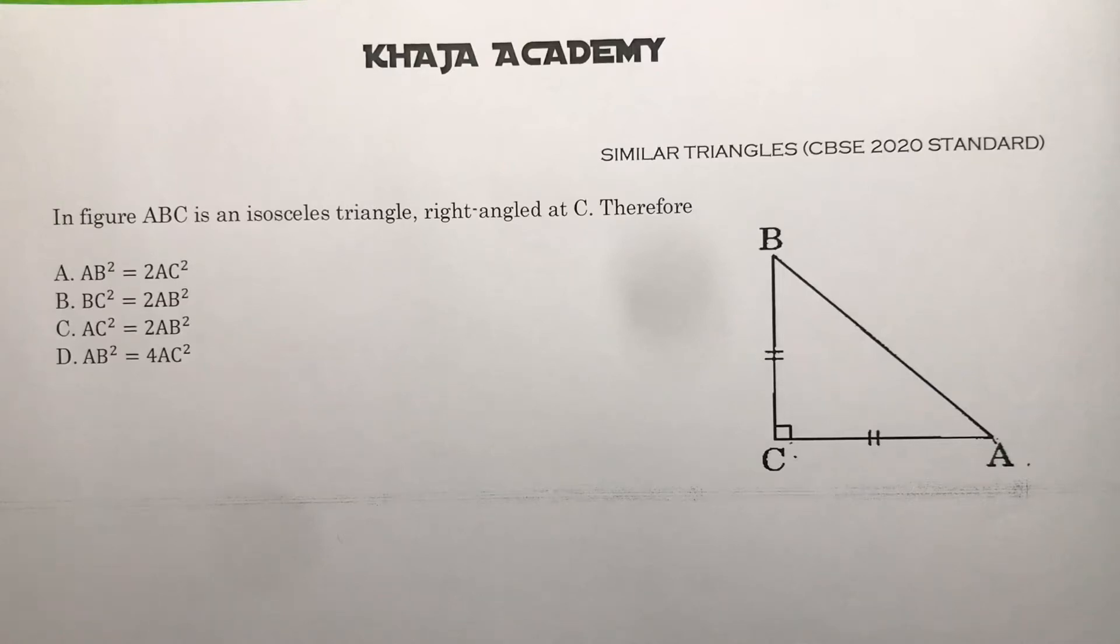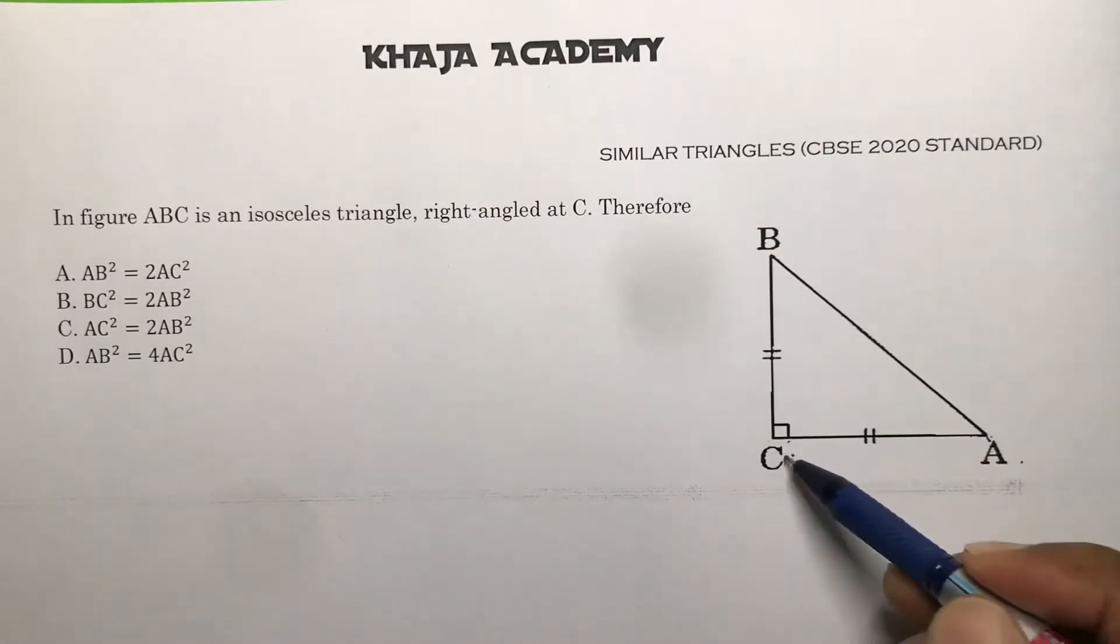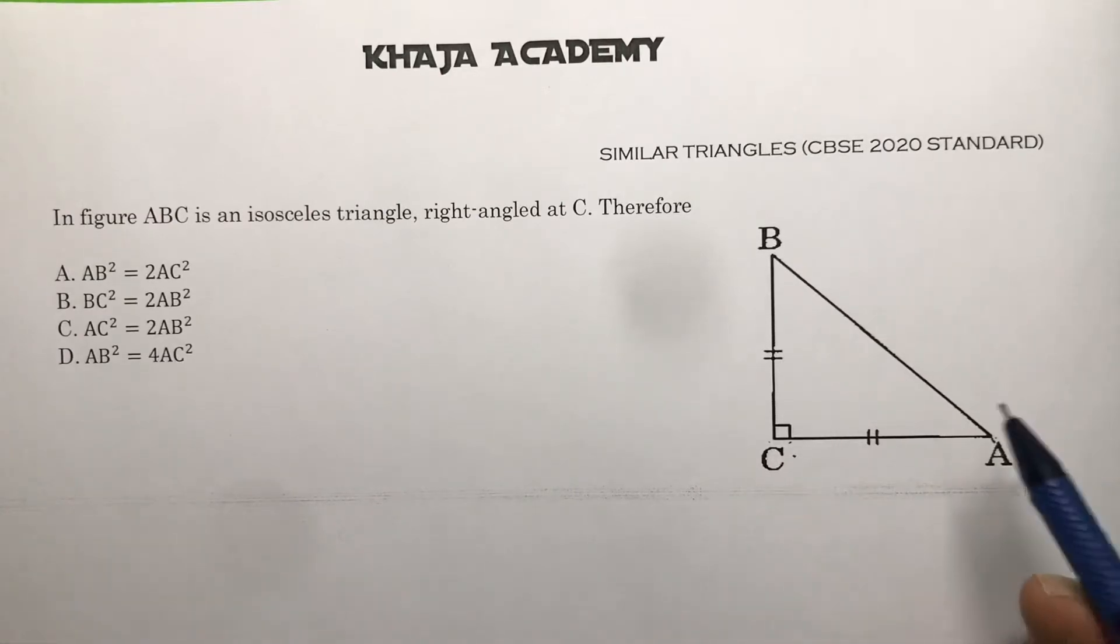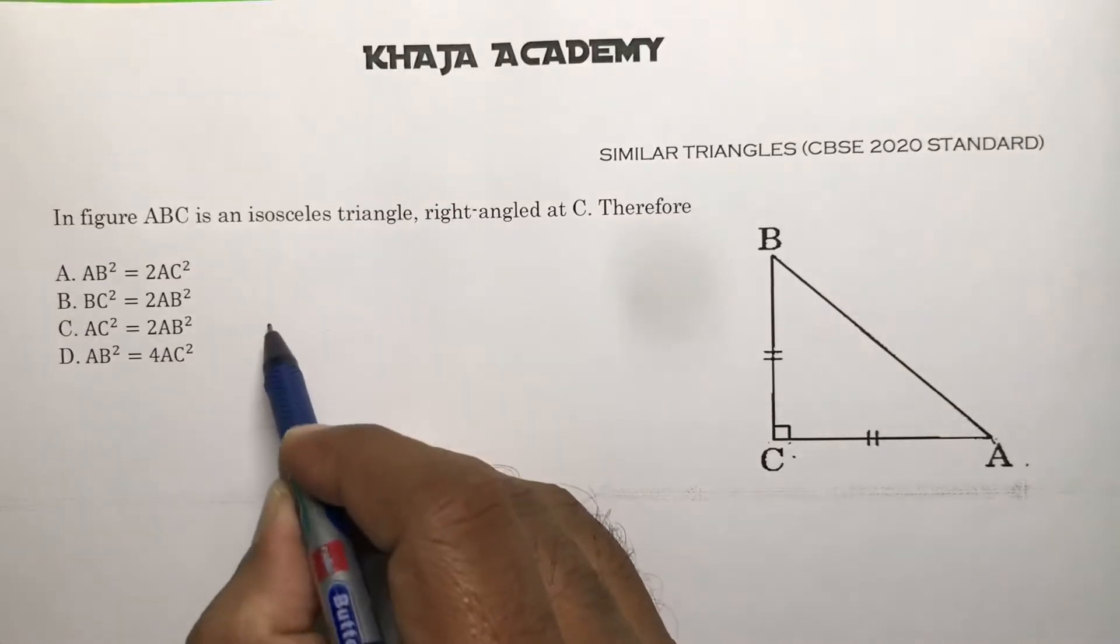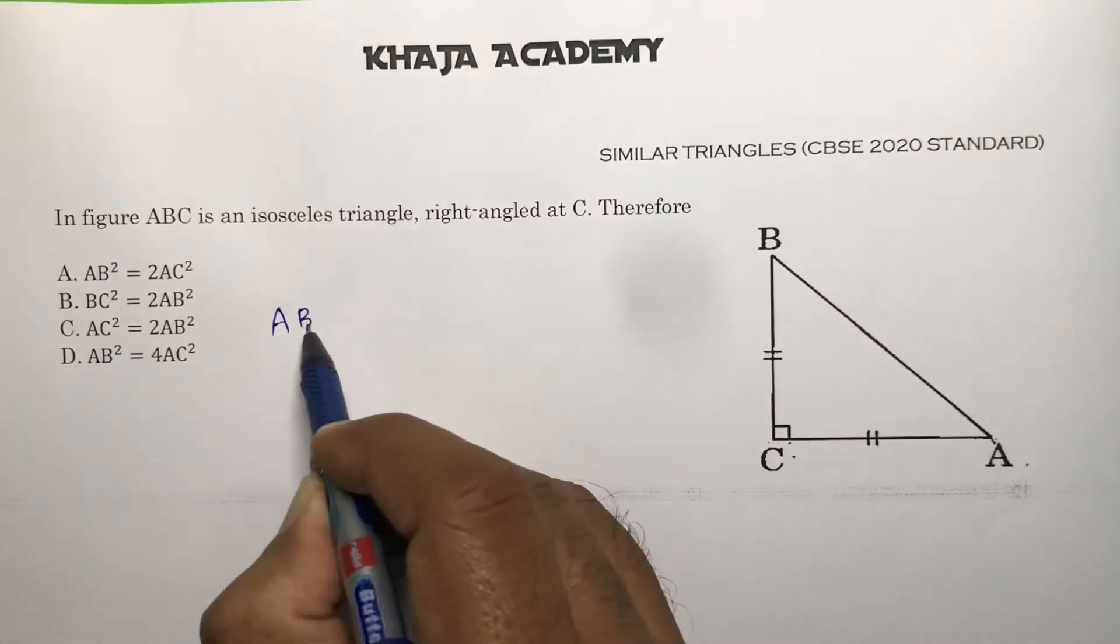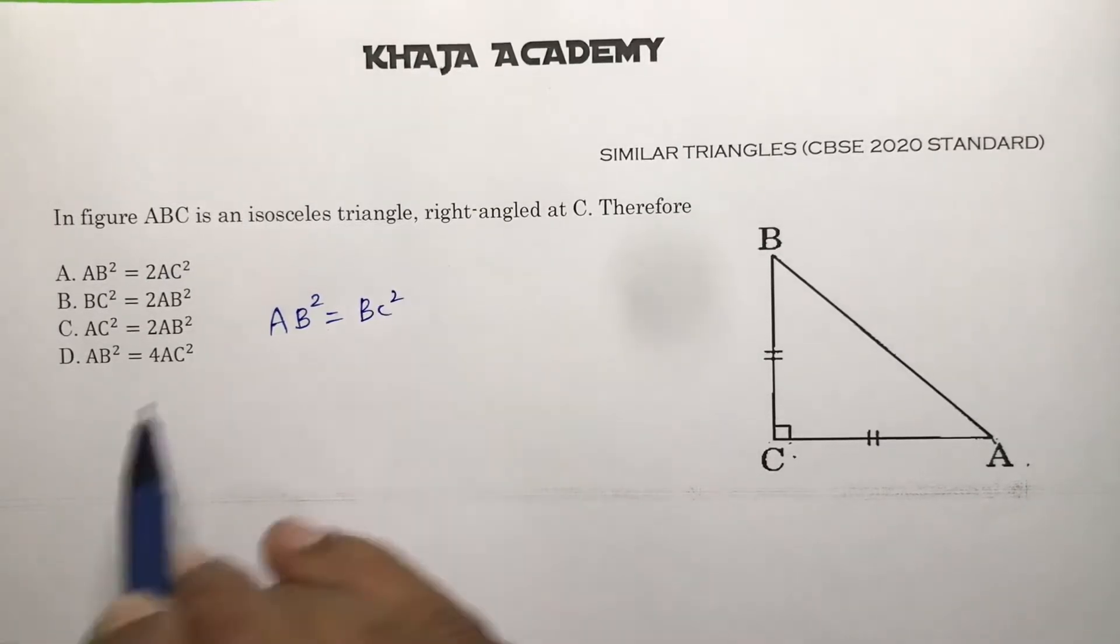In figure ABC is an isosceles triangle, right-angled at C. As it is right-angled at C and isosceles, these two sides will be equal. If you apply Pythagoras theorem for this triangle, AB square (hypotenuse square) is equal to sum of the squares of the other two sides, so BC square plus AC square.